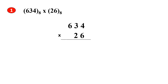Problem 1. First multiply 6, 3, 4 with 6. So 6 into 4 will give us 24. 24 is not an octal number because octal number is of base 8 and it should have numbers from 0 to 7. To make 24 into an octal number, we divide 24 by 8. We get quotient 3 and remainder 0. So, 0 is the sum and 3 is the carry.